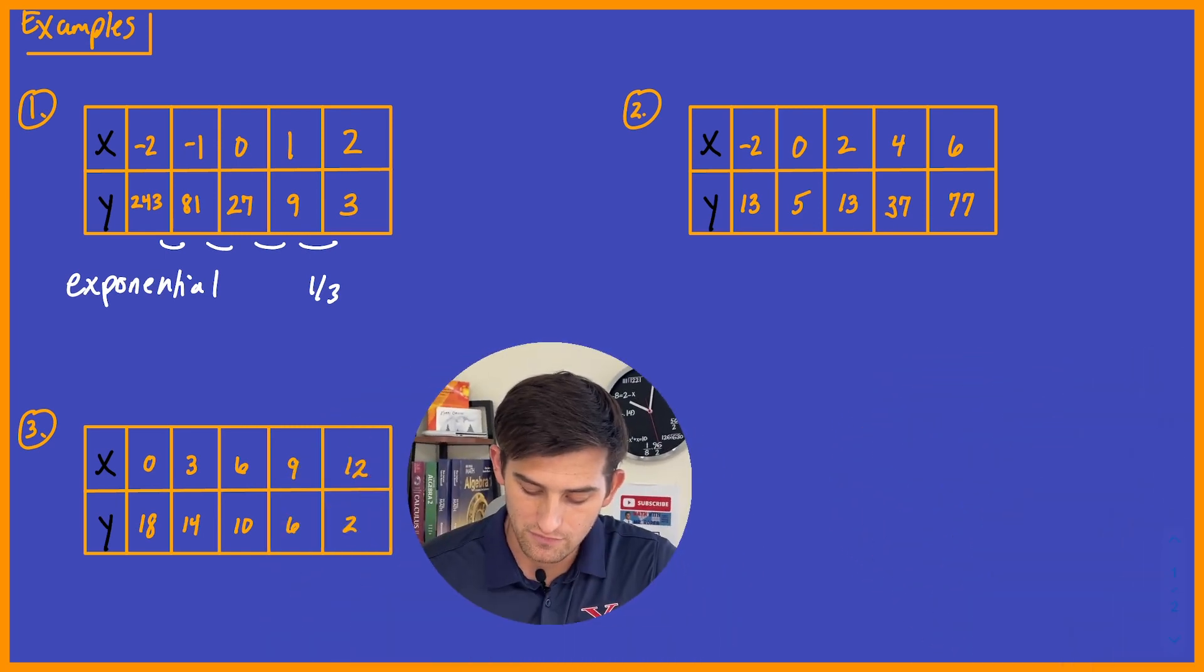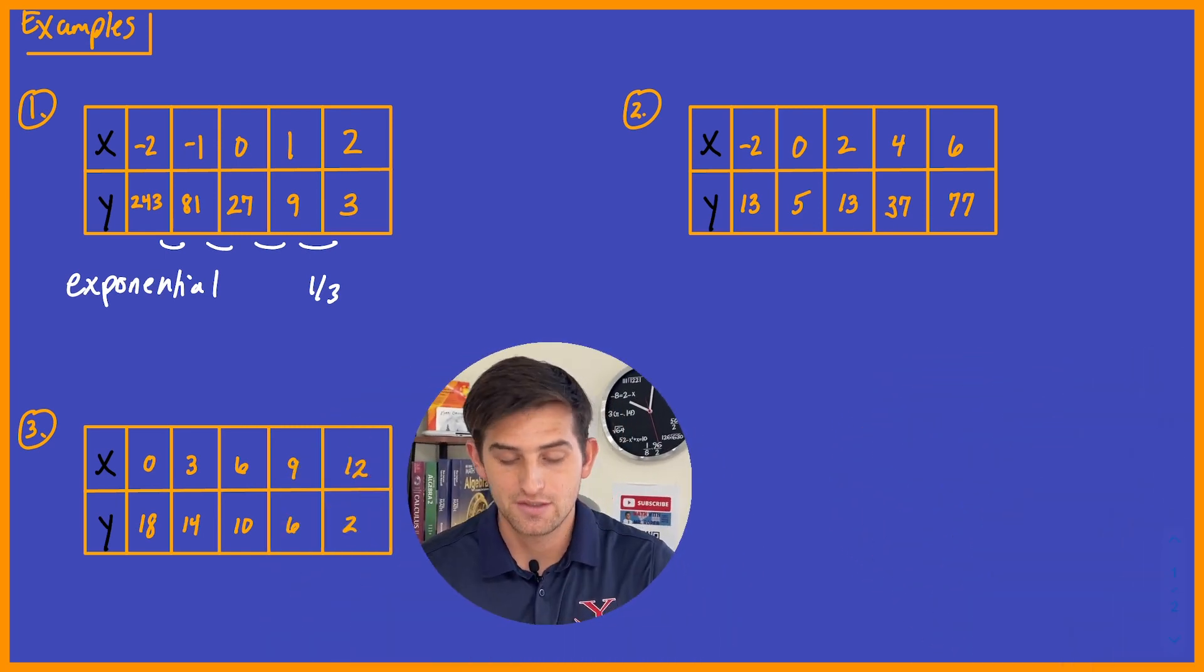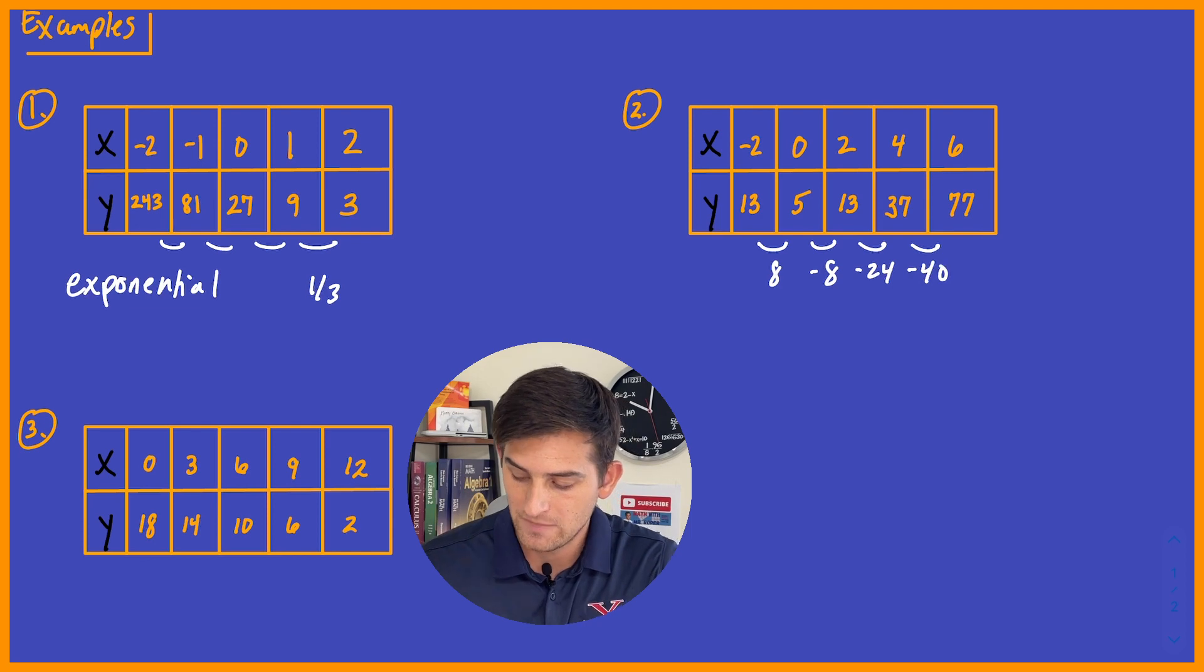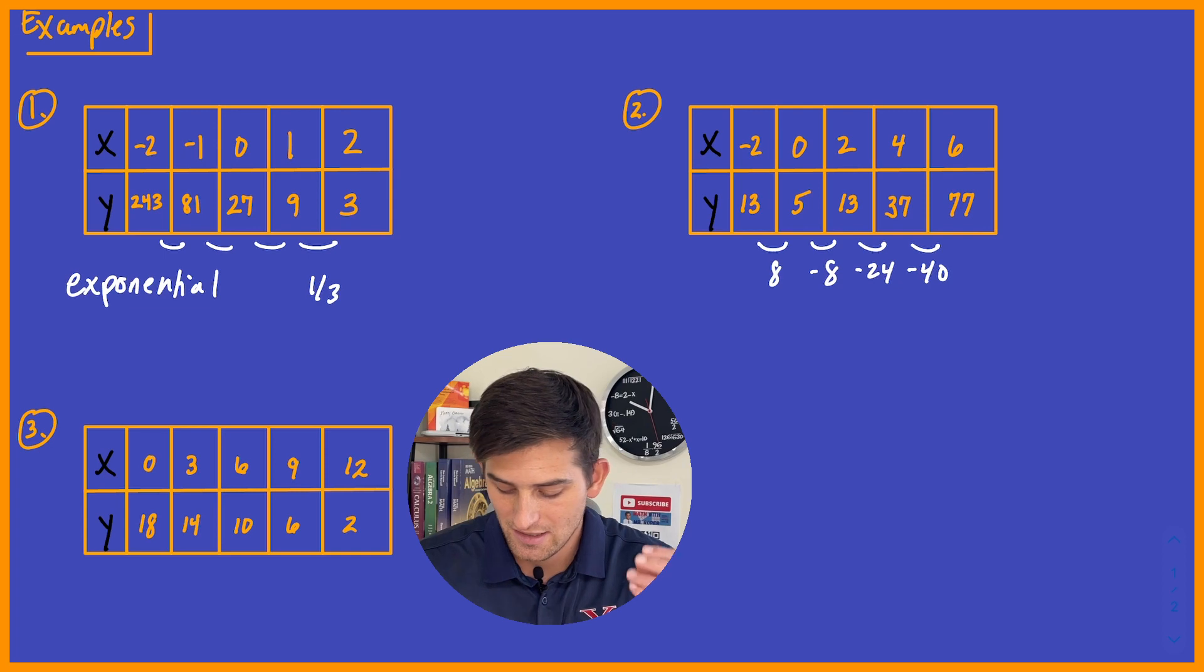Number two, we go negative two, zero, two, four, six. So our x values are constant. We're just increasing by two. That's okay. And now we look at our y values, 13, 5, 13, 37, and 77. So obviously we're not multiplying by anything there, so let's find our differences. So 13 minus 5 is 8, 5 minus 13 is negative 8, 13 minus 37 would be negative 24, and 37 minus 77 would be negative 40. So right off the bat, we see those are our first differences, and they're definitely not constant, so we're going to say this is for sure not linear.